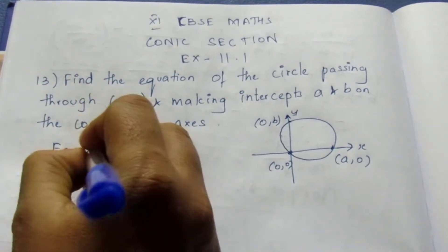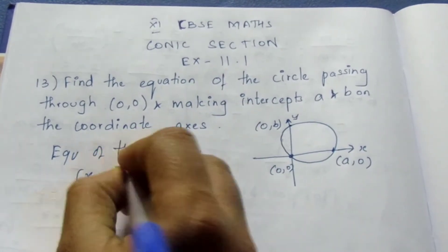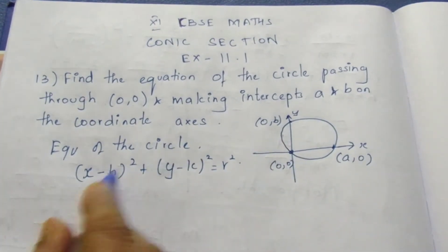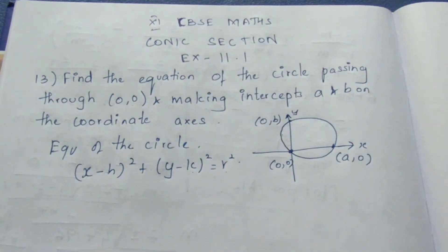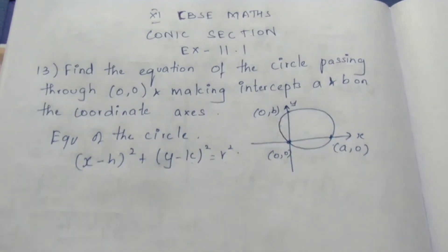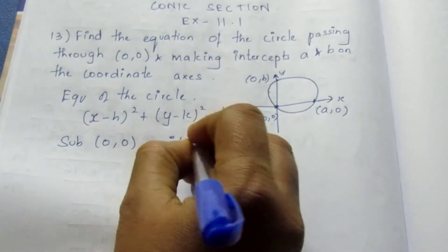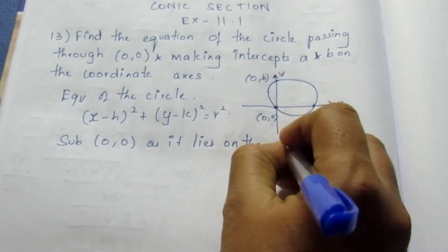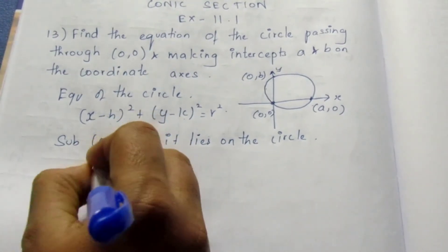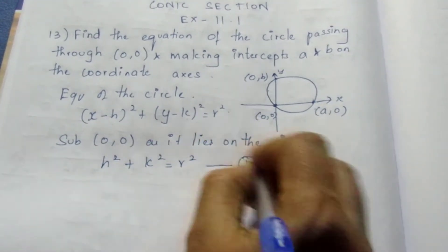We know the equation of a circle to be (x - h)² + (y - k)² = r². If we know h, k, and r, we can find the equation of the circle. Let me substitute the points to find h and k. By substituting (0,0), since it lies on the circle, we get h² + k² = r². I am writing this as equation 1.